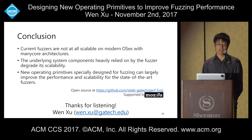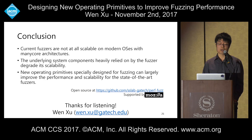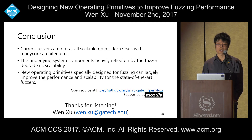In conclusion, current fuzzers are not scalable on modern operating systems with many-core architectures, which will be the future. The underlying system components relied on by fuzzers degrade their scalability, something previous works failed to notice. We proposed new operating primitives specialized for fuzzing, and proved they can largely improve performance and scalability for state-of-the-art fuzzers. We will open source this project, which is supported by Mozilla Research, and plan to apply our techniques to practical large-scale fuzzing.